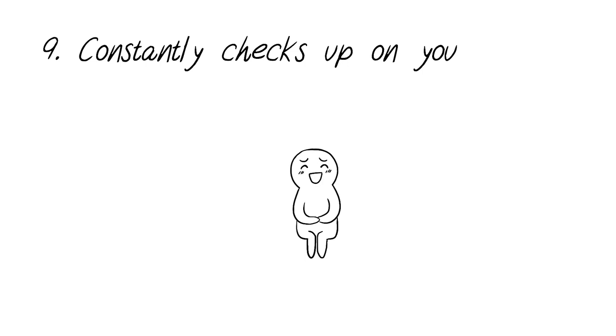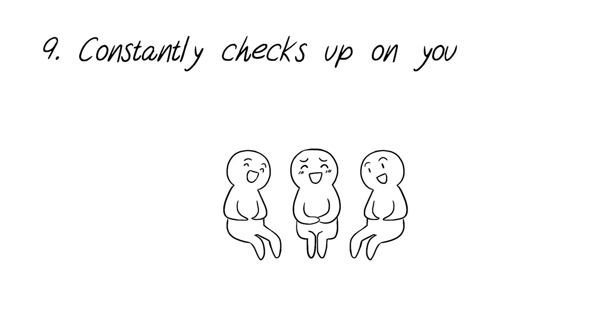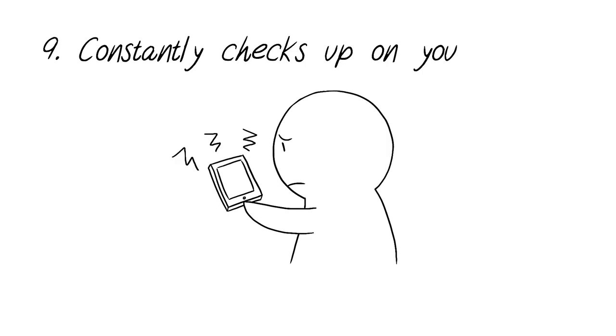9. Constantly checks up on you. An abuser might employ this as a way of keeping their victim in line. They may demand that their victim text them at certain intervals while they are out, and can even request that the victim send specific pictures, like them holding up a peace sign, or a selfie with the friend they said they were with.